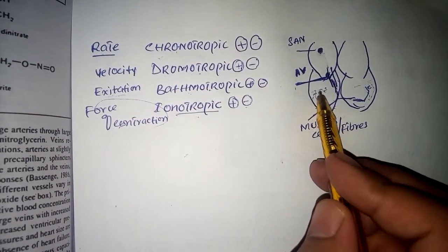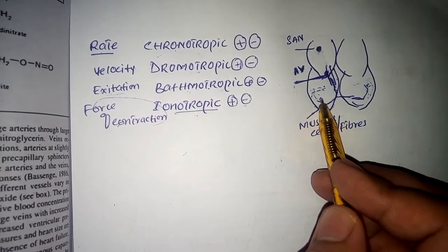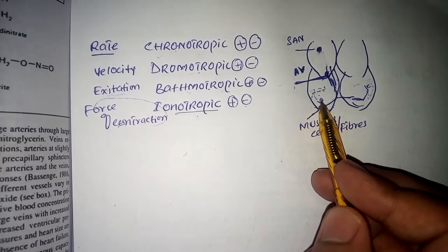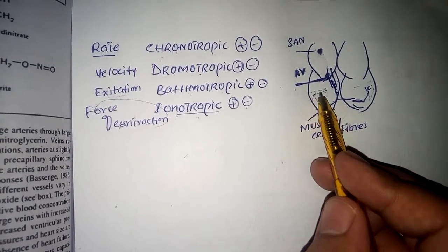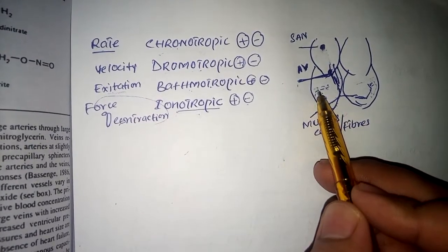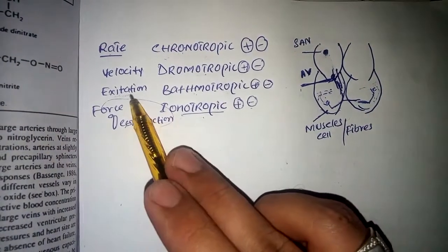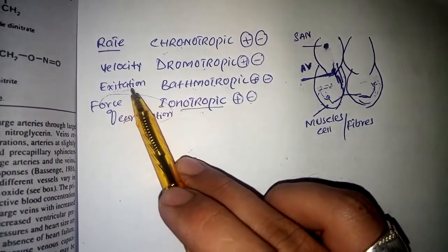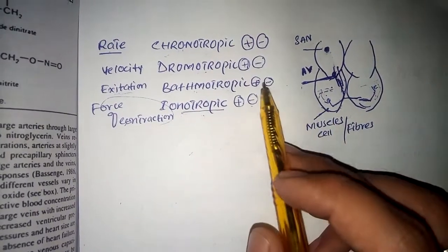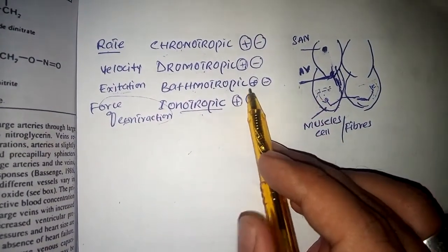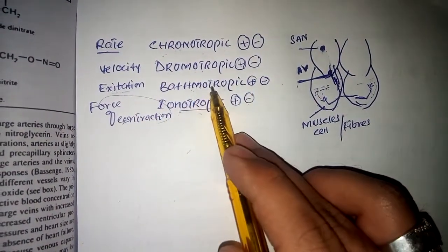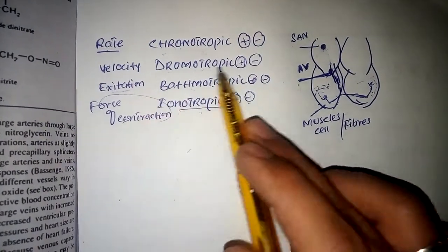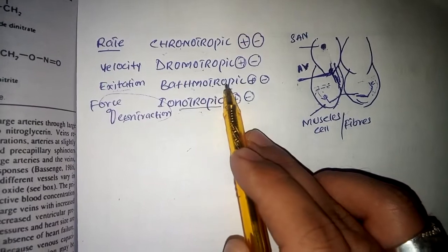The signal reaches the muscle fibers by means of the Purkinje fibers. As the muscle fibers receive the signal, they become active and excited. This excitation is of two types: if the excitation is very high, we call it a positive bathmotropic effect, and if the excitation is very low, we call it a negative bathmotropic effect.